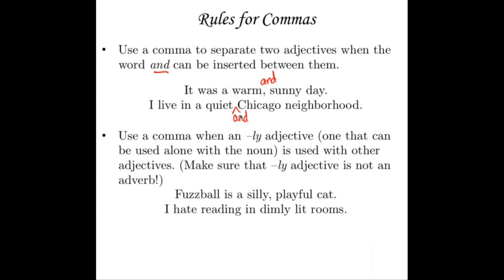You also use a comma when an LY adjective — one that can be used alone with the noun — is used with other adjectives. Make sure the LY word is not an adverb, since adverbs very often end with LY, but some adjectives do too. For example: "Fuzzball is a silly, playful cat" — silly is an adjective even though it ends in LY, so we have a comma. But "I hate reading in dimly lit rooms" — dimly is an adverb modifying the adjective "lit," not modifying "rooms" directly. You wouldn't say "dimly rooms," so it's an adverb, not an adjective, and therefore no comma.